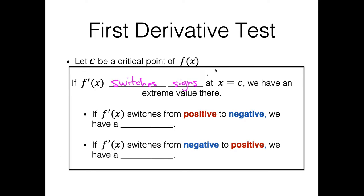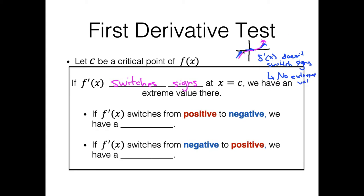Let's think about why this works even in the case of the x cubed function. That function is increasing everywhere except at the critical point, so if we drew tangent lines, it's increasing before, zero at the critical point, and continues to increase after — it does not switch signs. So in this case, we have no extreme value. This test works to eliminate critical points like x cubed that have no extreme value.